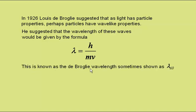This is known as the de Broglie wavelength, and is sometimes shown as λdb. H being Planck's constant, 6.63 × 10⁻³⁴ joule seconds, m the mass, v the velocity, so this is the momentum of the particle. So the de Broglie wavelength is given by Planck's constant over the momentum.